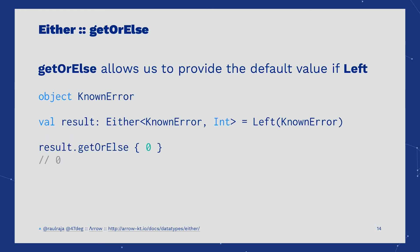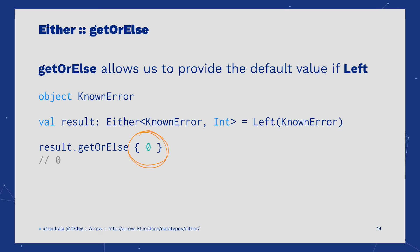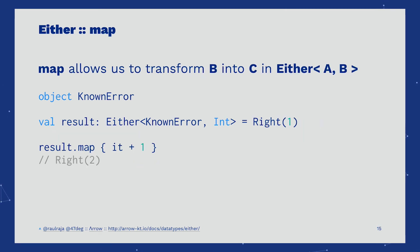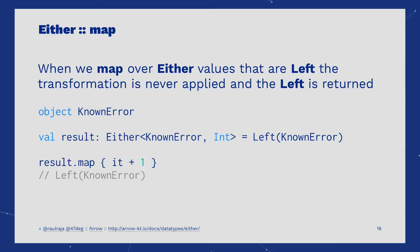A concretion to the previous fold is getOrElse. In getOrElse, we are simply providing the function that addresses the left case — if it's a known error, we should return zero instead. Map allows us to transform the values inside an Either. It operates only on the right case, and that's why we say Either is right-biased. If we were mapping and there was a left, the transformation is never applied and the left is left untouched.